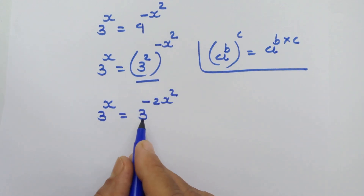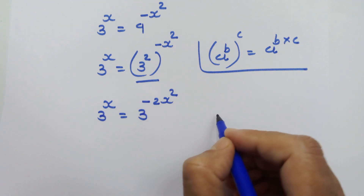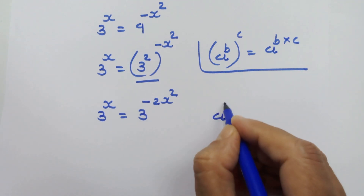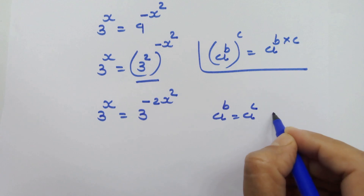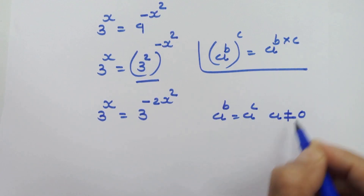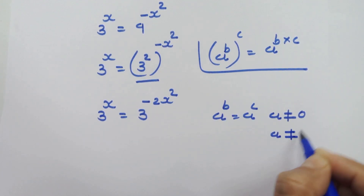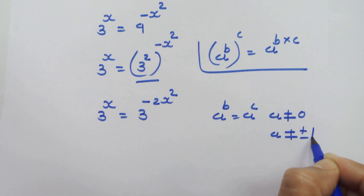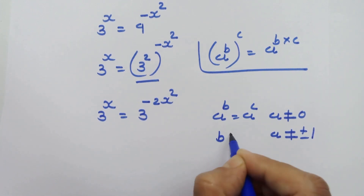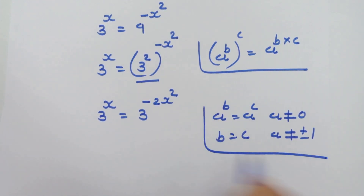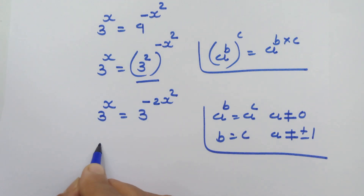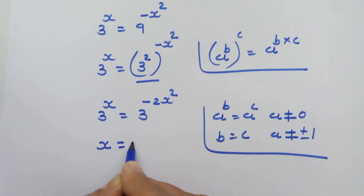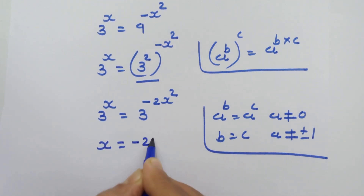Now we have got the same base at both sides. So as per the rule, if we have a raised to b is equal to a raised to c, where a is not equal to 0 and a is not equal to plus or minus 1, then we can equate the exponents: b is equal to c. By using this rule here, we can equate the exponents. So we have x is equal to minus 2x square.